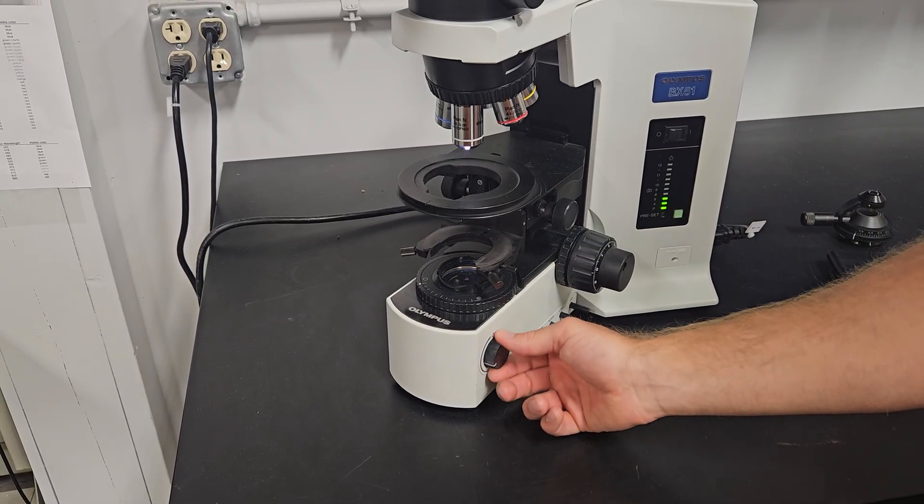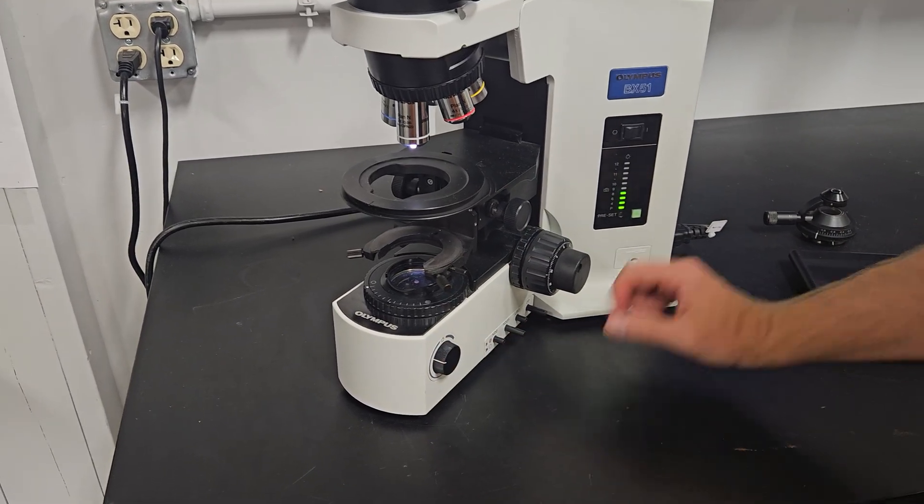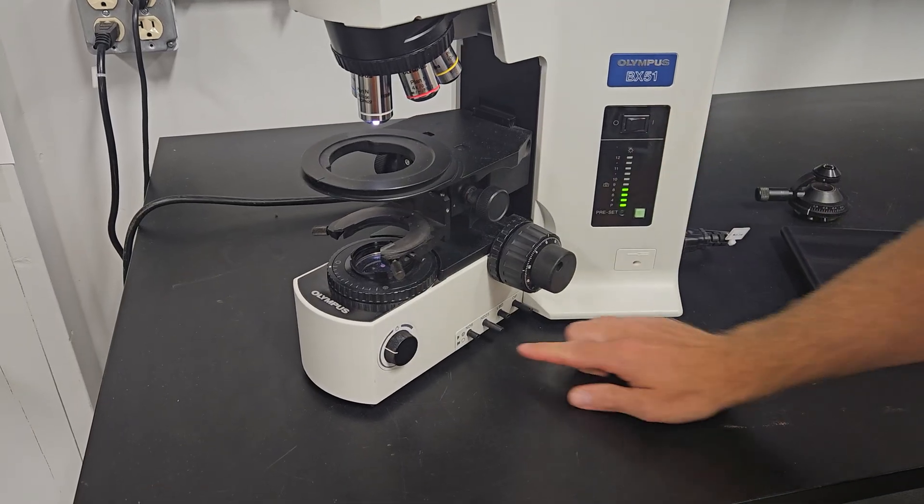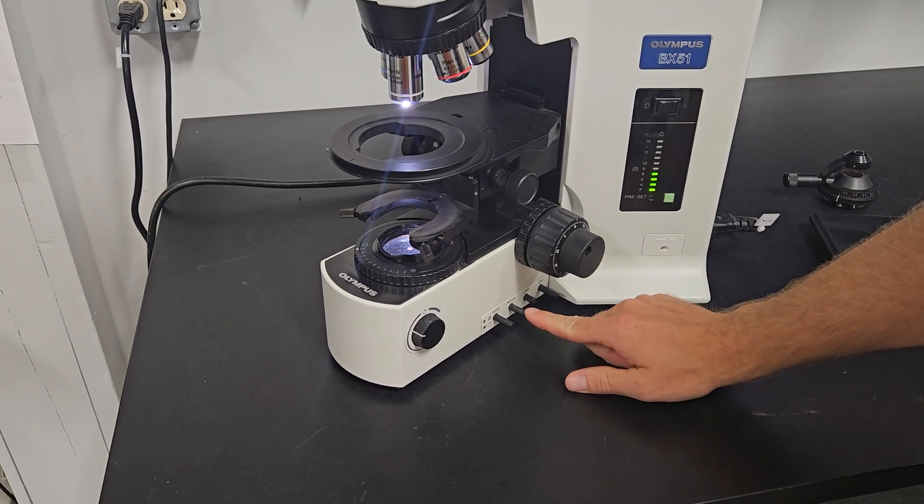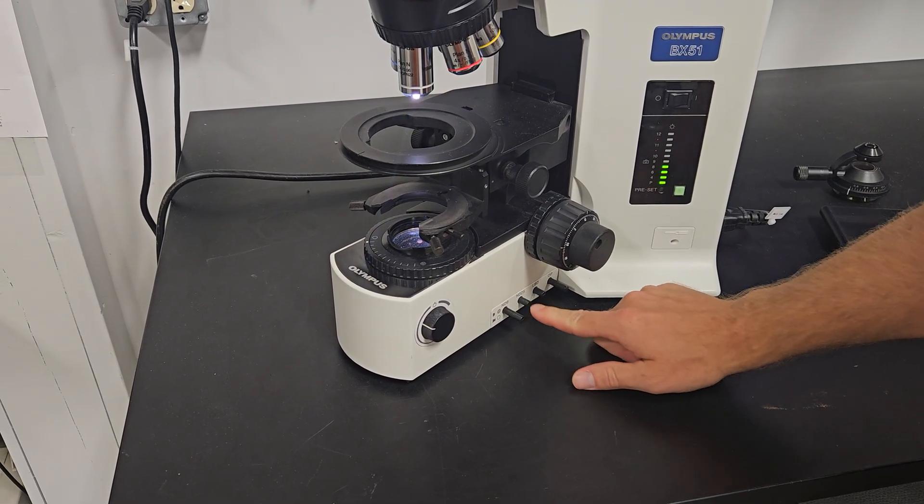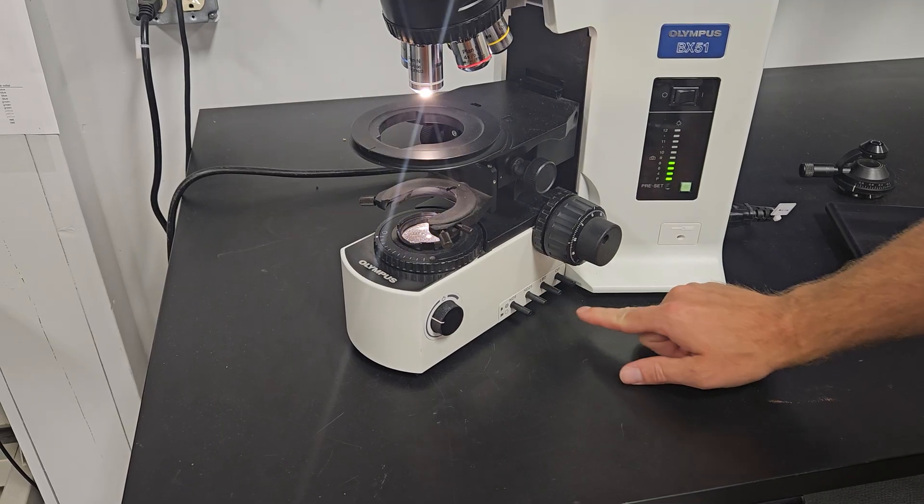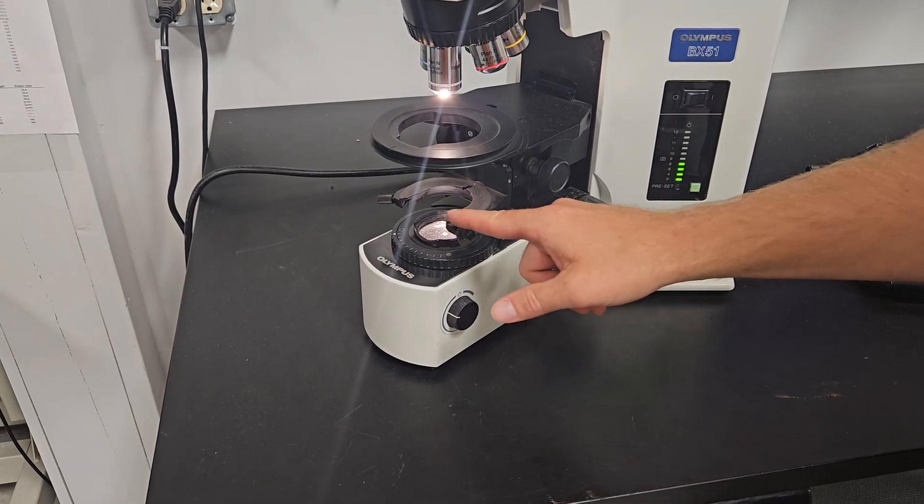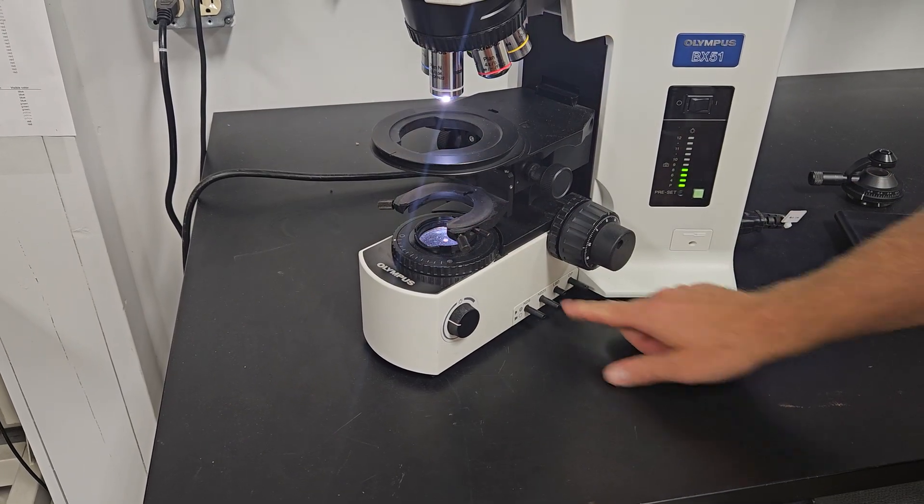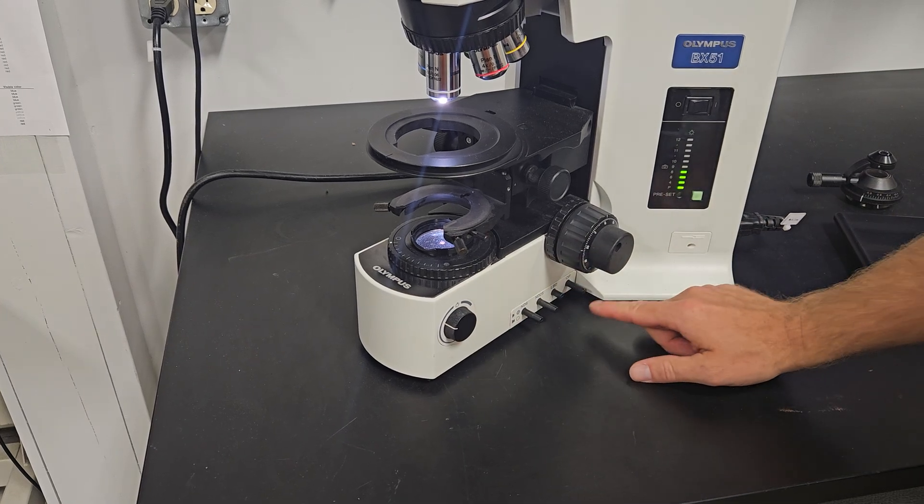You have your rheostat right here. These filters, we get a lot of questions on 51s about these filters. There's a neutral density filter here, neutral density filter here, daylight blue filter. See when we click that one out, the light's kind of yellow looking. So you want that, that'll give you a crisp white, nice looking light.